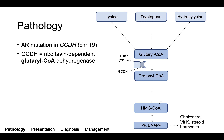Glutaric aciduria type 1 is caused by an autosomal recessive mutation in the gene GCDH on chromosome 19. GCDH stands for riboflavin-dependent glutaryl-CoA dehydrogenase, and this enzyme functions to convert glutaryl-CoA into crotonyl-CoA. Glutaryl-CoA is a derivative of the amino acids lysine, tryptophan, and hydroxylysine.